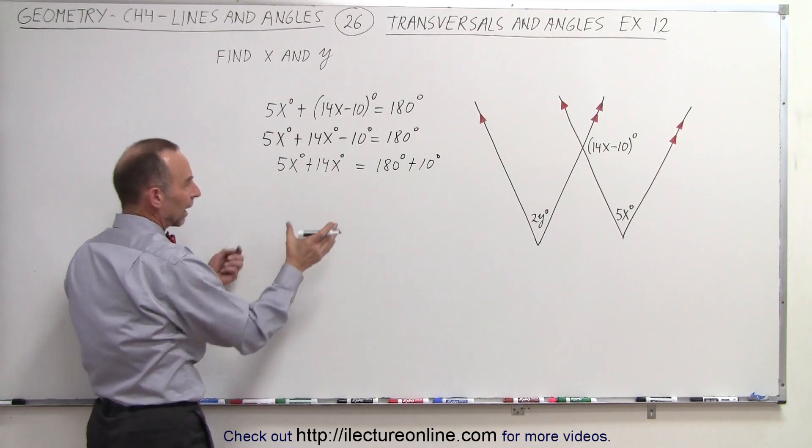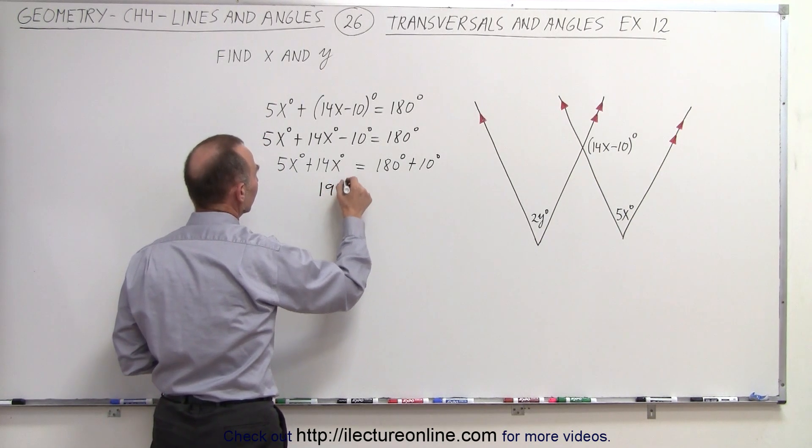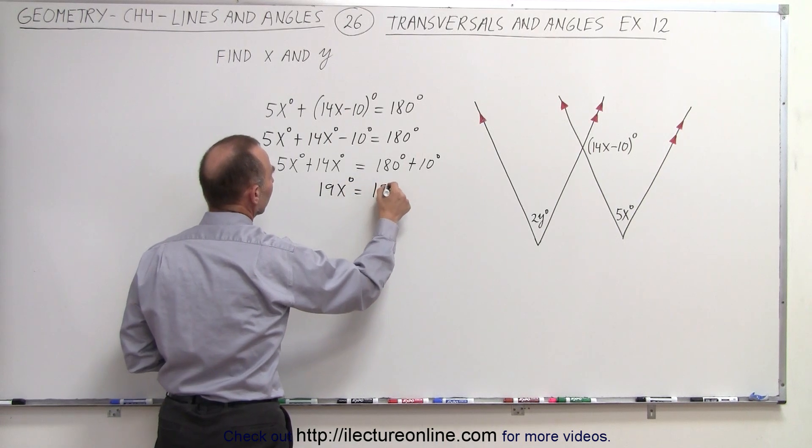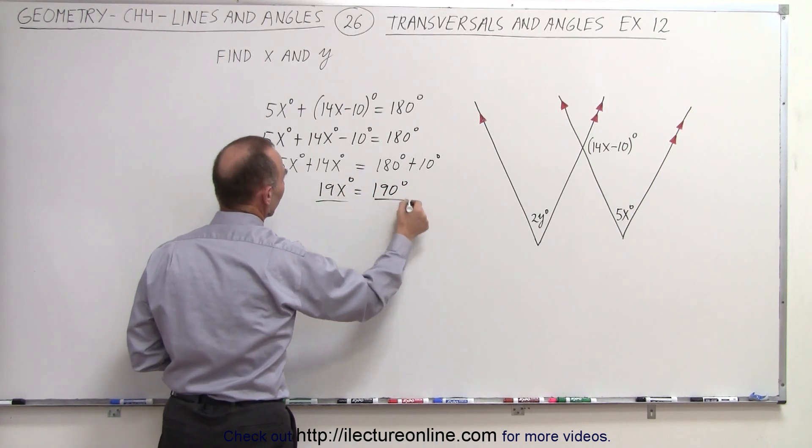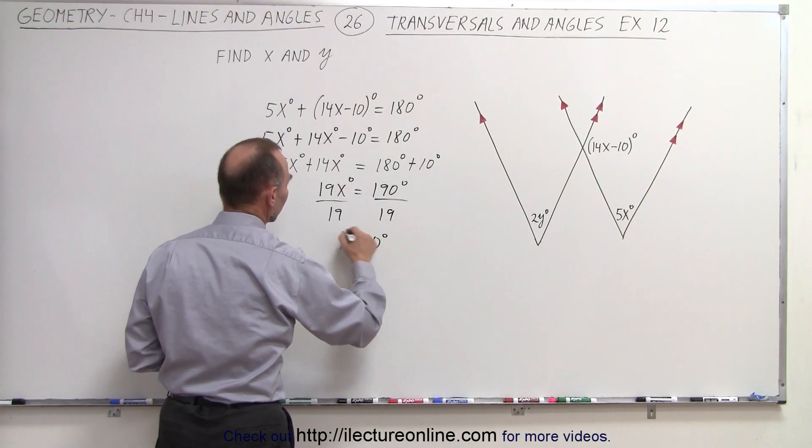I have plus 10 on the right side. I can now combine like terms. So this becomes 19x degrees is equal to 190 degrees. Divide both sides by 19, and you can see that x is equal to 10 degrees.